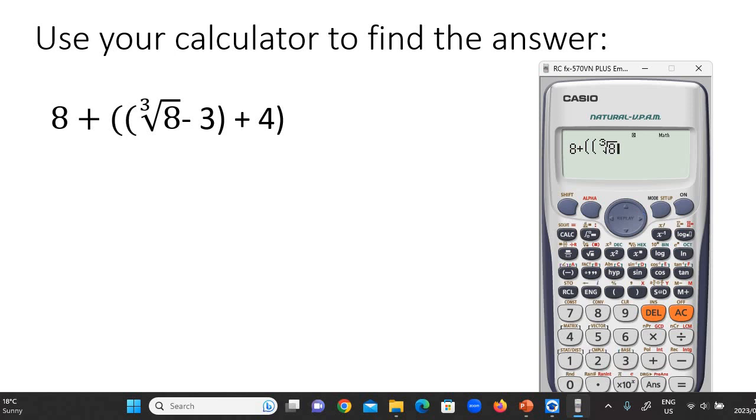The minus 3 part is on the outside of the square root. So don't do it like this. This would be wrong. You see that's inside the root. Rather push the arrow and then say minus 3. You see how it's not inside? Then it says plus 4 and then it says close the bracket. And then if we press equals, you should get 11.